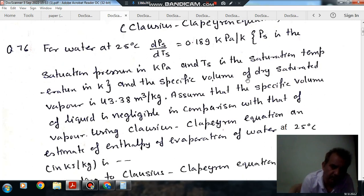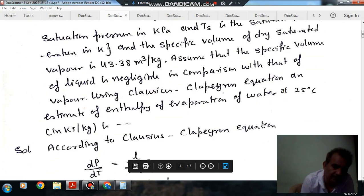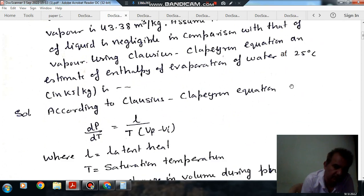And the specific volume of dry saturated vapor is 43.38 m³/kg. Assume that the specific volume of the liquid is negligible in comparison with that of vapor. Using Clausius-Clapeyron equation, an estimate of enthalpy of evaporation of water at 25 degrees Celsius in kJ/kg is required.